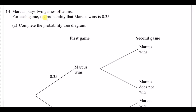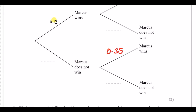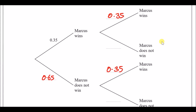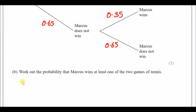Number 14: Marcus plays two games of tennis. For each game, the probability that he wins is 0.35. So the probability of him not winning — otherwise losing — will be 0.65, because all probabilities must add up to one. That's two marks right there.